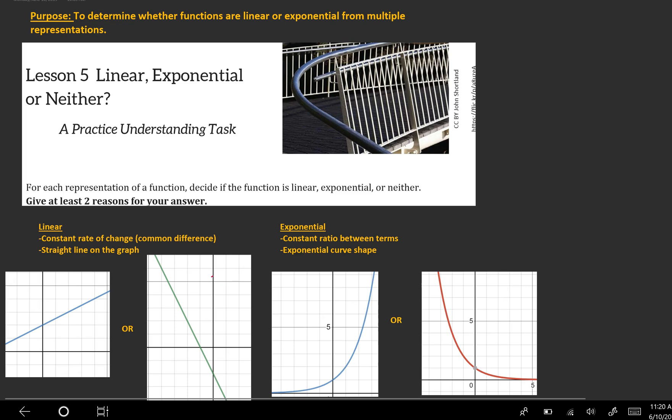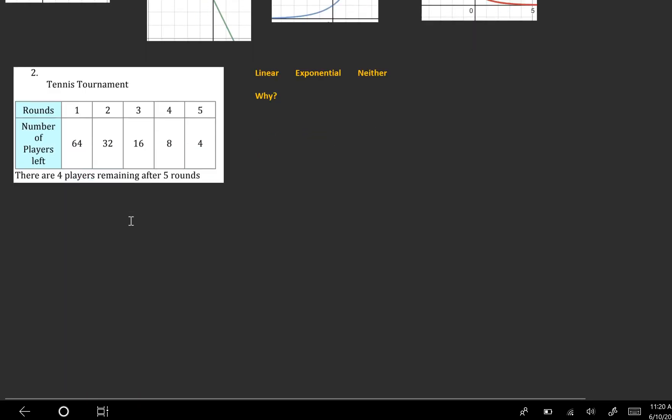Exponential functions have a constant ratio between terms, which we've called the common ratio from geometric sequences. They have an exponential curve shape - you'll notice we have an increasing exponential curve or a decreasing exponential curve. Just because it's curved doesn't mean it's exponential; it has to look like one of these two. Notice how they come close to the x-axis but don't cross it.